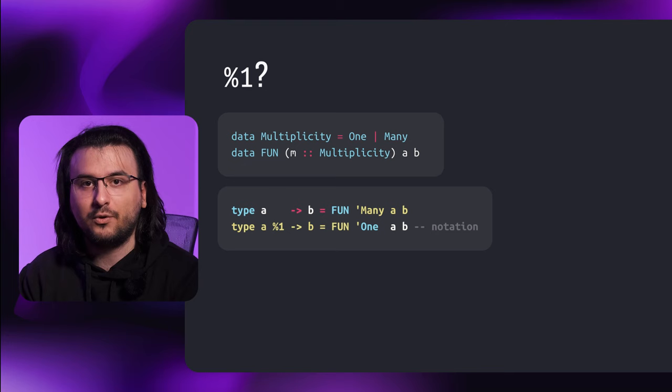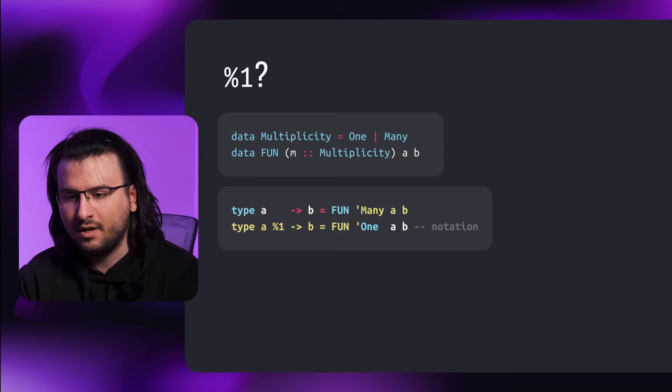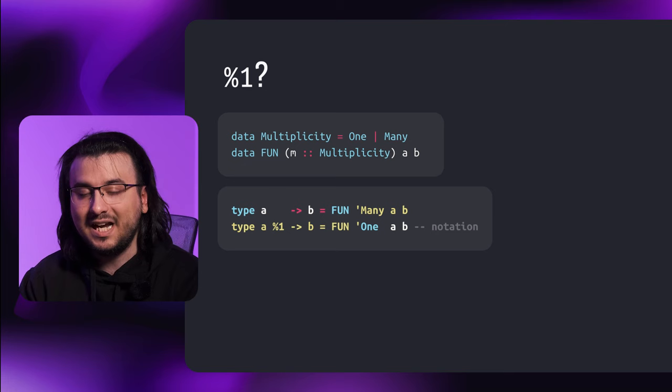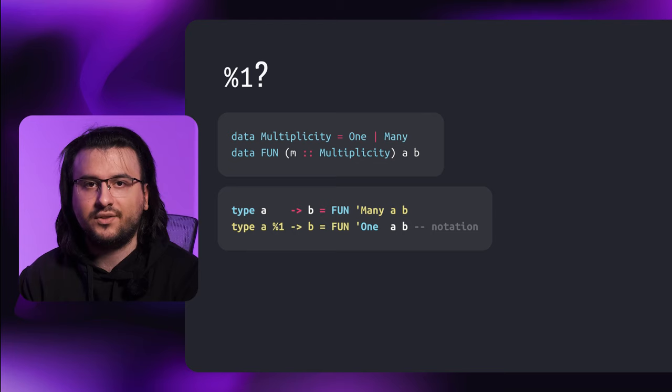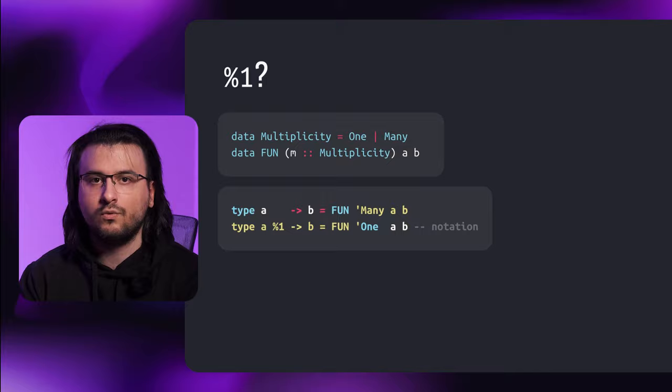Starting from GHC 9.0, the function data type is called Fun, which now not only accepts the type of the input and the type of the output, but also the multiplicity of the input. Multiplicity is a data type consisting of two nullary constructors: One and Many — roughly speaking, how many times an argument appears in the body of the function. The function arrow has become a type synonym equal to Fun applied to Many, meaning the argument can be used however many times we want. The argument in such functions is declared unrestricted. The notation for linear functions is Fun applied to One.